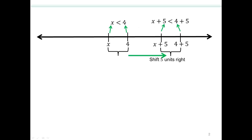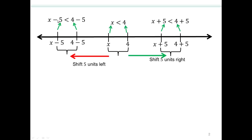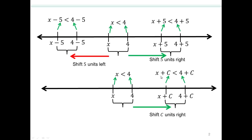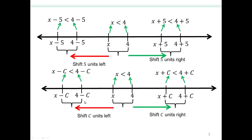Preserve means: if x is to the left of 4, then x plus 5 is to the left of 4 plus 5. Similarly, if you subtract, the same thing happens — x minus 5 is to the left of 4 minus 5, so the inequality is preserved. We can add or subtract a number on both sides of an inequality, as long as it's the same number added or subtracted from both sides. The inequality is preserved, just like the equation was.